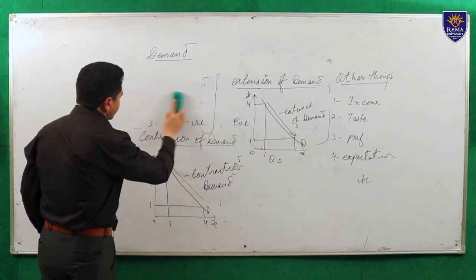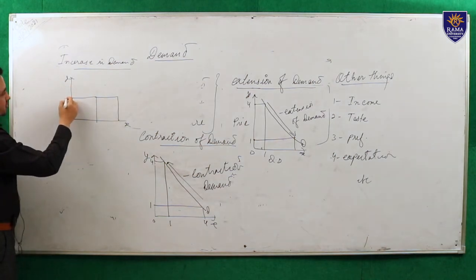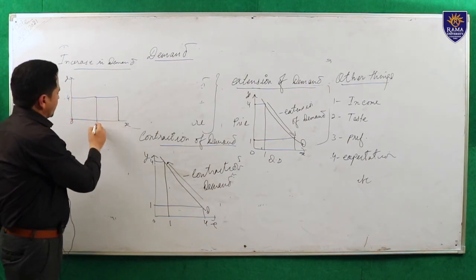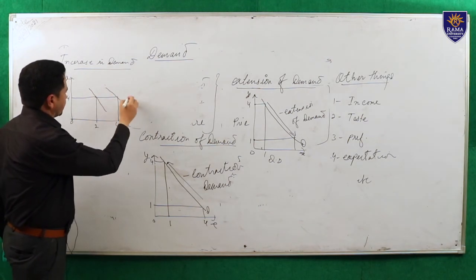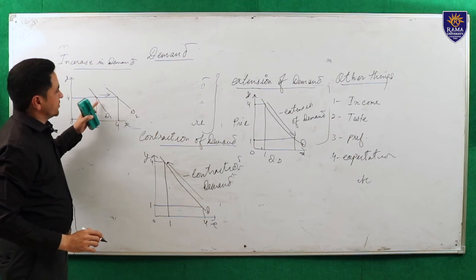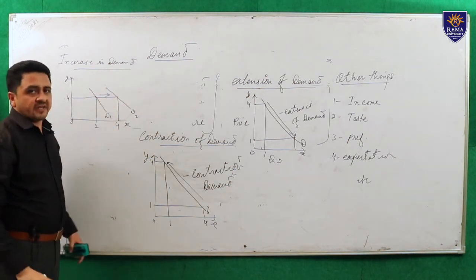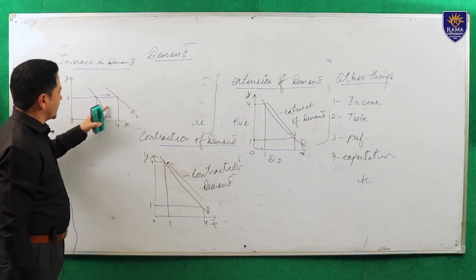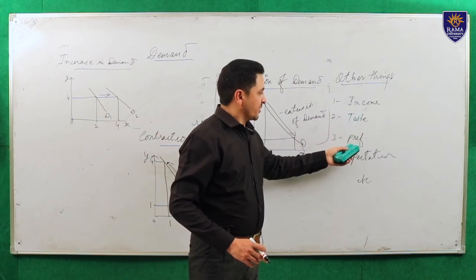The next topic is increase in demand. In increase in demand, you have to be focused on the price on the y-axis — the price should be in constant form. For example, price is 4 and demand is 2. At the same price, demand increases from 2 to 4. This is demand curve D1 and D2 — it shifts forward. Another word you can use is forward shift in the demand curve, which is a synonym of increase in demand. Here price doesn't change — it stays constant — but the demand goes forward due to change in other things: income, taste, preferences, and expectations.